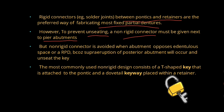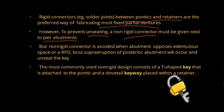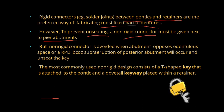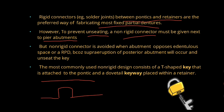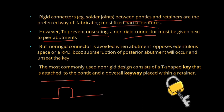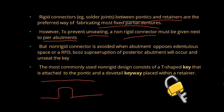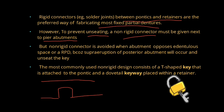Next, in which condition is this non-rigid connector avoided? It is avoided when, for example, there is a pier abutment and the opposing arch is edentulous or there is an RPD. In those conditions, a non-rigid connector is avoided because it will cause supra-eruption of your posterior abutment and will unseat the key. That is the fourth point to remember.